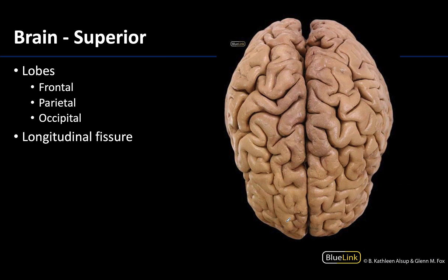Moving to a superior view, all you can see is the cerebrum — all cerebrum all the time. You can actually see both of the hemispheres here, separated by the dominant longitudinal cerebral fissure that separates the two hemispheres. Recall that the falx cerebri is going to sit here during life. The frontal lobe is anteriorly placed with the parietal lobes kind of intermediate, and you can only see just a little bit of the occipital lobe in a superior view.